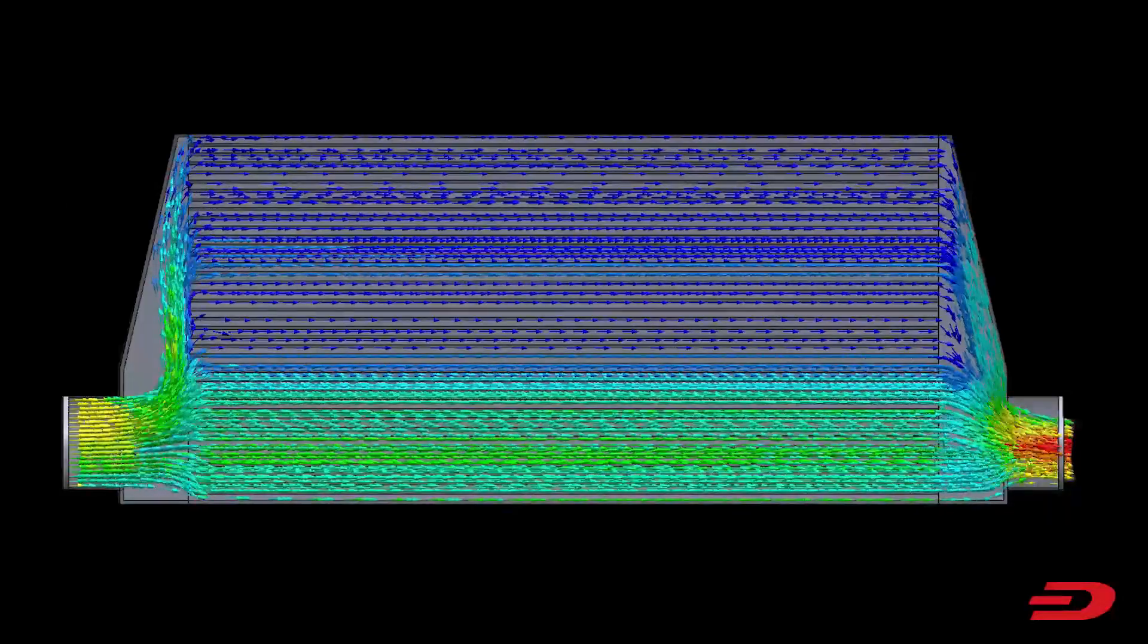With no turbulence, air can now freely travel through the center of the core, giving a much better distribution and better cooling.